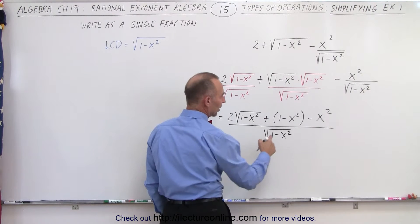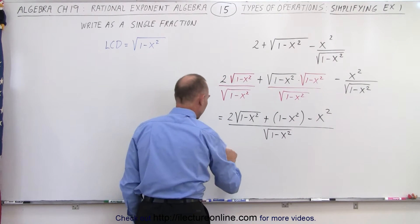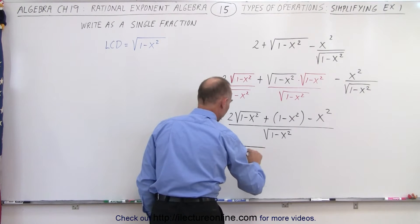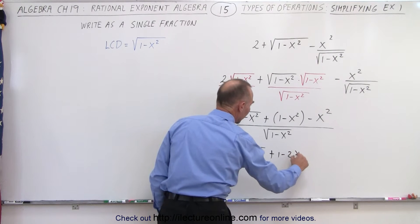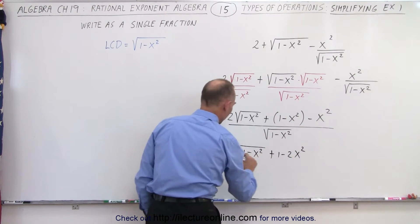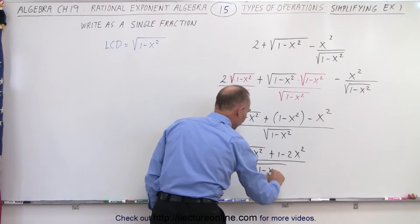Now, can I simplify some things here? Well, I have 1 minus x squared minus x squared, so this can be written as 2 times the square root of 1 minus x squared, plus 1 minus 2x squared, because I have two of them, all divided by the square root of 1 minus x squared.